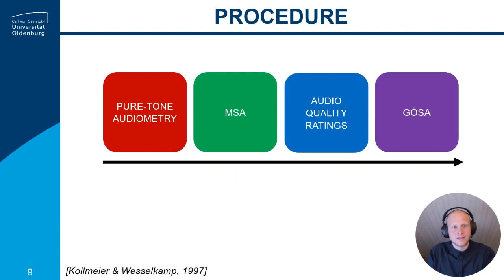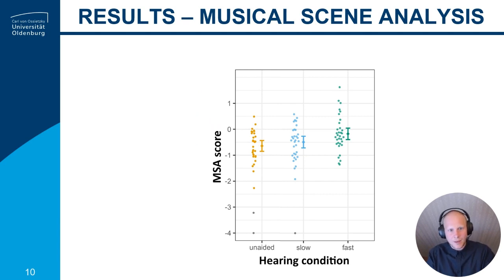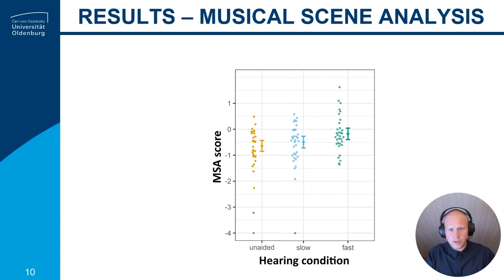In the end, a standard speech reception threshold in noise was employed: the Göttinger sentence test. Here we see the MSA ability scores for each hearing condition. A score of zero indicates median performance in comparison to the calibration population, and higher scores indicate better performance.